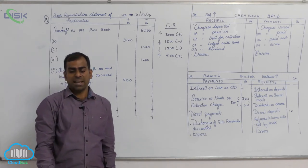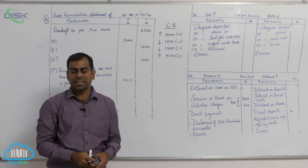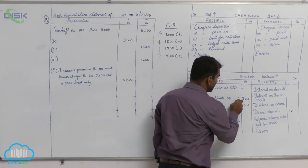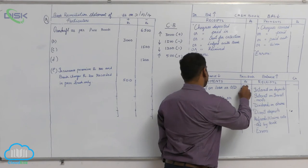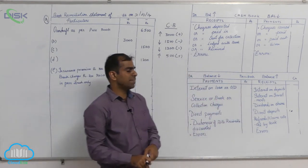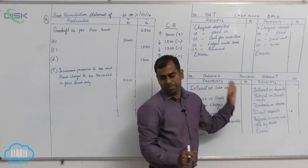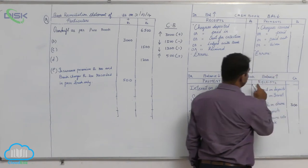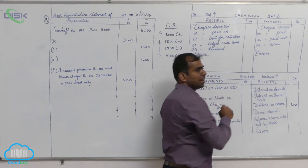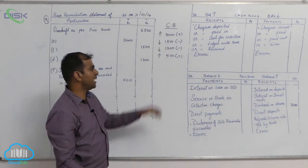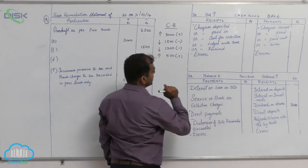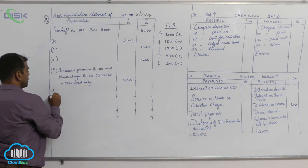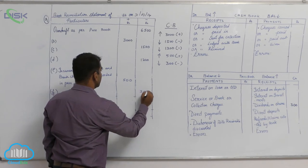Transaction F: dividend of 300 collected by bank has been credited in the passbook only. Whenever the word 'collection' appears, it is a receipt item. Dividend is recorded in the passbook first, so the passbook balance increases by 300. Since we are finding out the cashbook balance, when the passbook balance is increasing, the cashbook balance will decrease by 300. Enter 300 in the minus column.